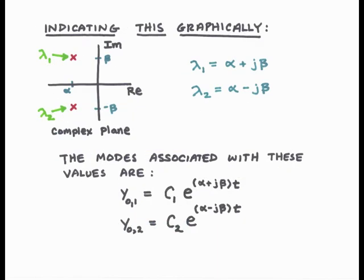This situation can be illustrated graphically as seen here. Lambda 1 is given by alpha plus j beta — its real value is alpha and its imaginary value is beta. Lambda 2 is given by alpha minus j beta — its real value again is alpha, but the imaginary value is negative, minus beta. So lambda 1 and lambda 2 appear as mirror images of each other in the complex plane, mirror images about the real axis.